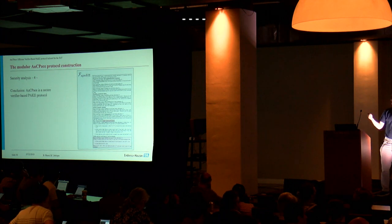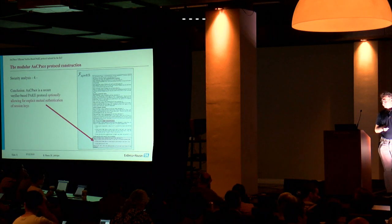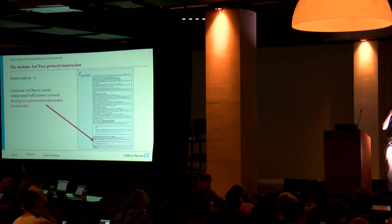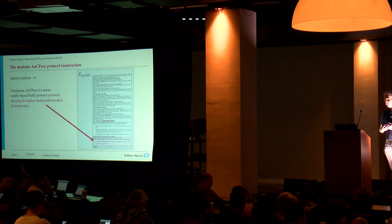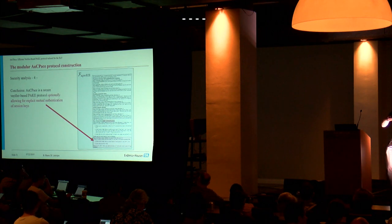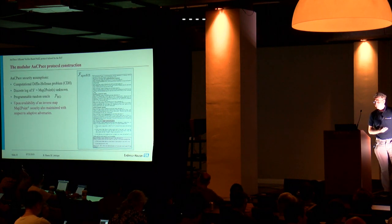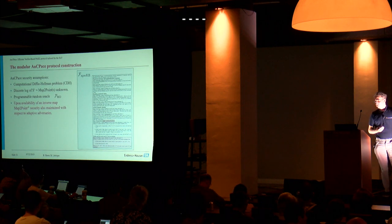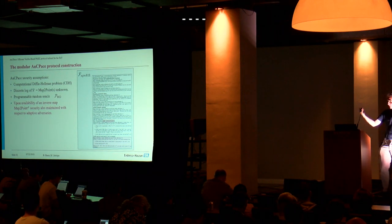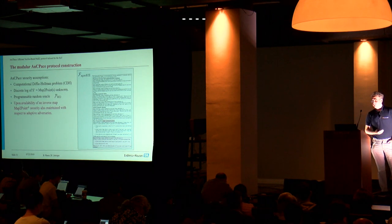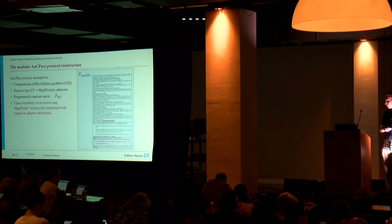In the second step, we consider a functionality defined by Canetti et al. in 2006 and show indistinguishability between our entire protocol with this ideal functionality. So we have the conclusion that this protocol provides composable security guarantees of the ideal functionality. The security assumptions are based on the computational Diffie-Hellman problem. We assume that the discrete log of a point generated by Elligator or by a map-to-point primitive is unknown and we have had to assume a programmable random oracle which seems to be the minimum assumption for an augmented PAKE protocol in the UC framework.